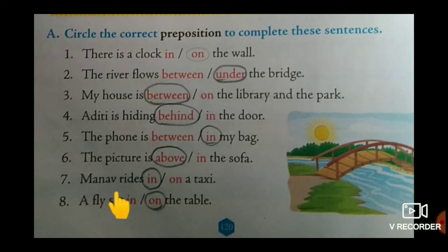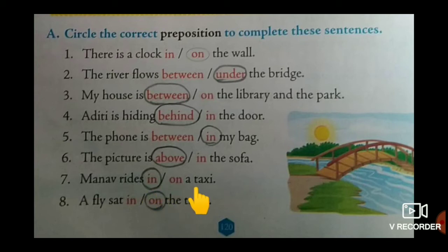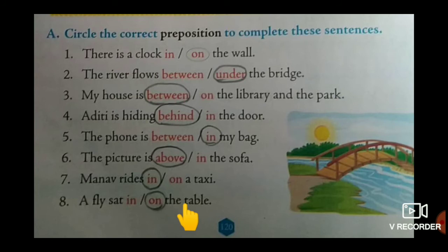Next one: Manav rides in a taxi. Taxi means car, children. 'On a taxi' is not possible — you sit inside a taxi, so 'in' is correct. And the last one: a fly sat on the table.